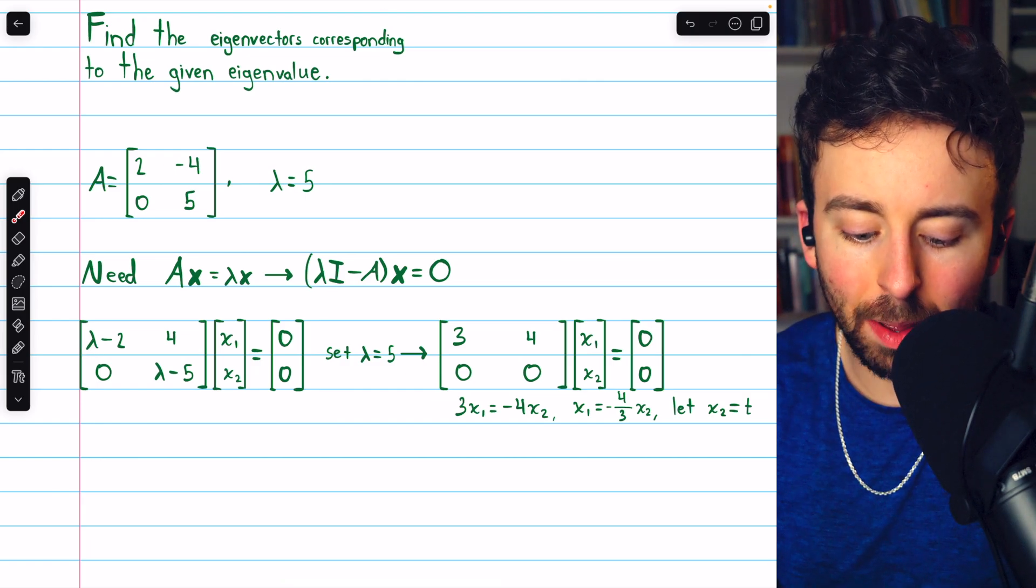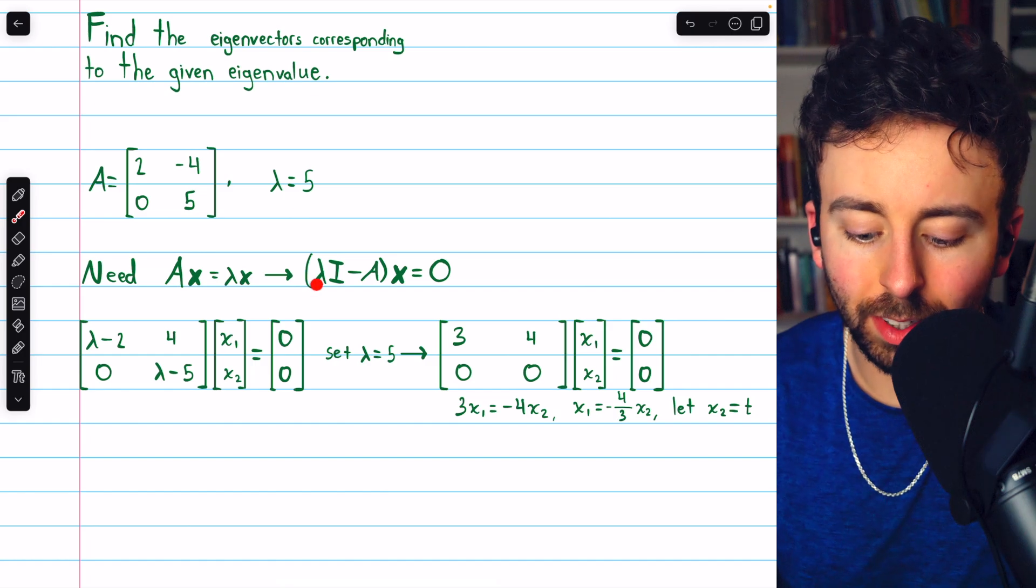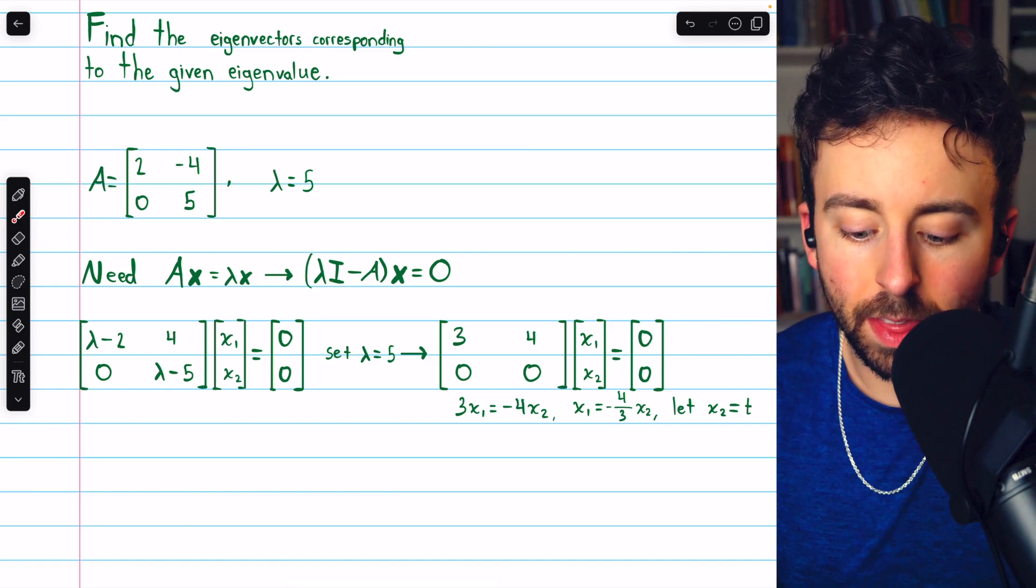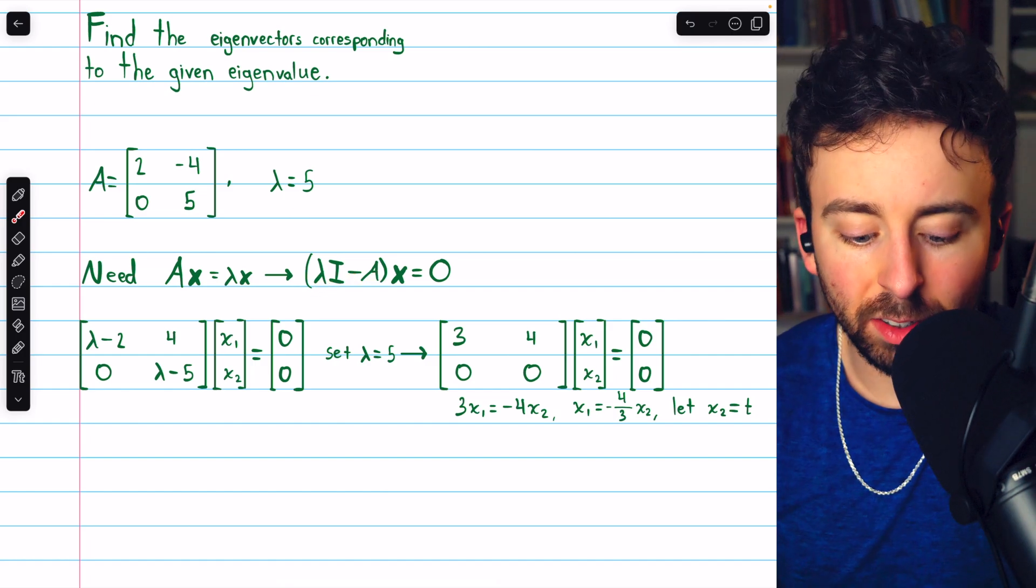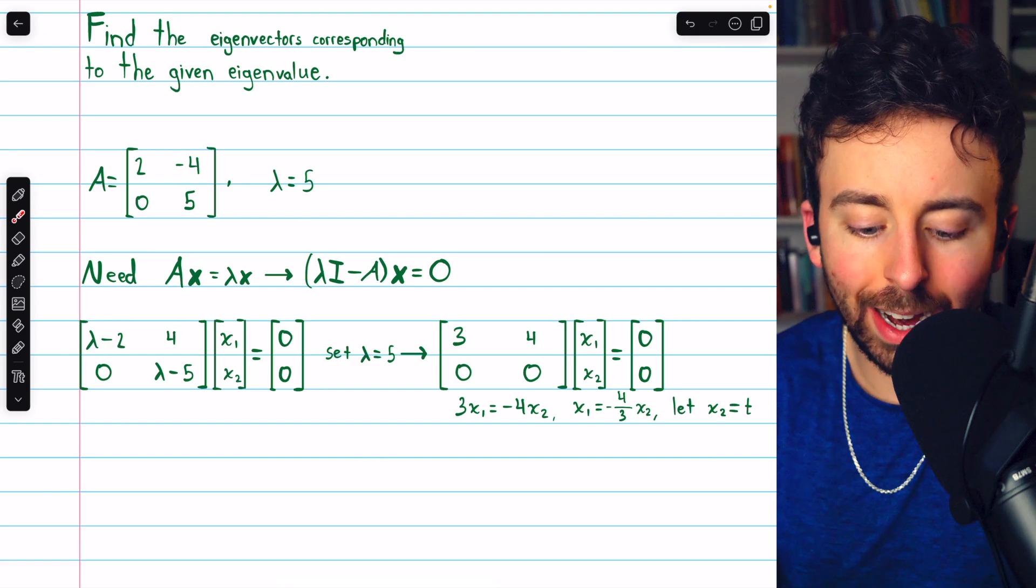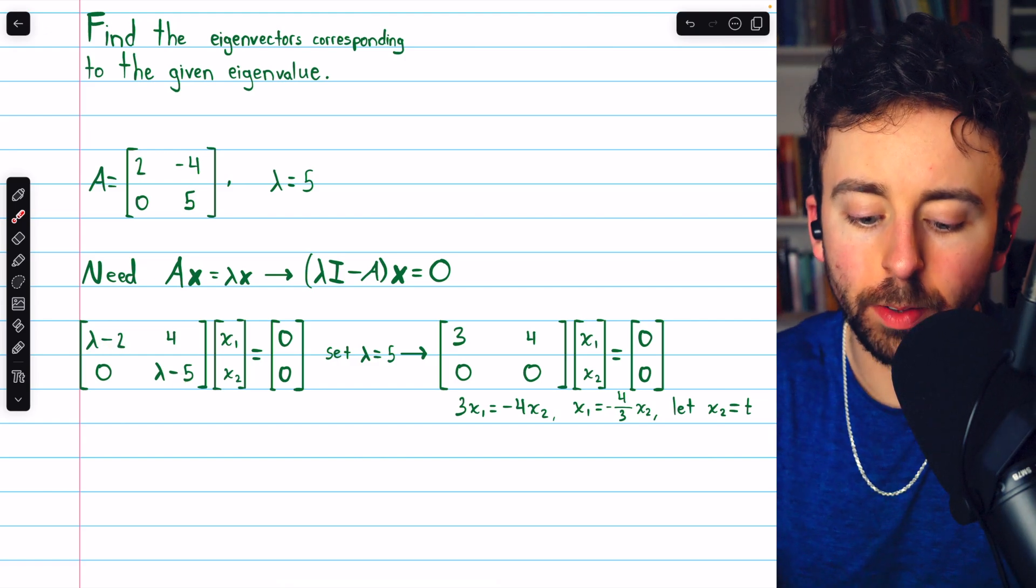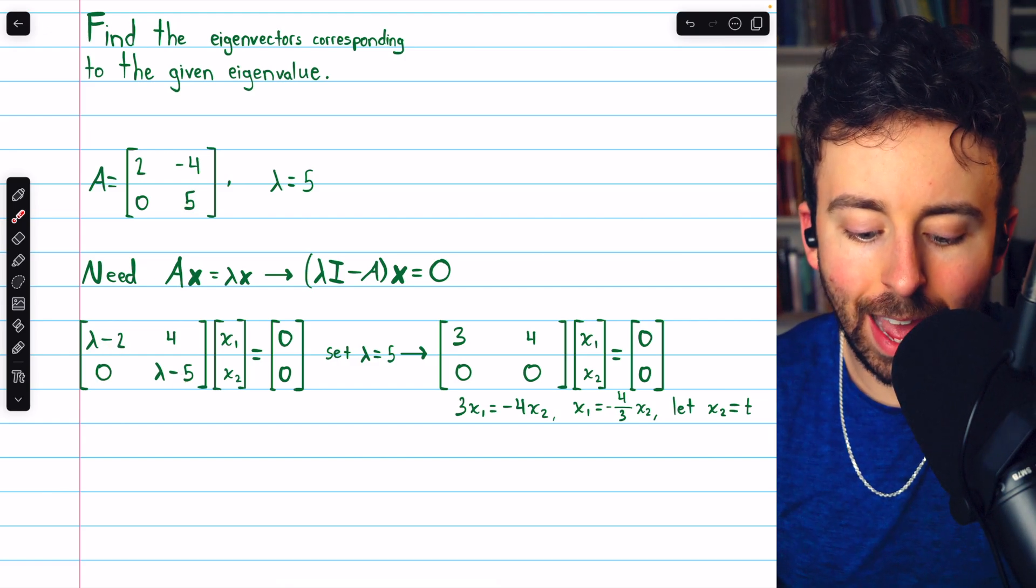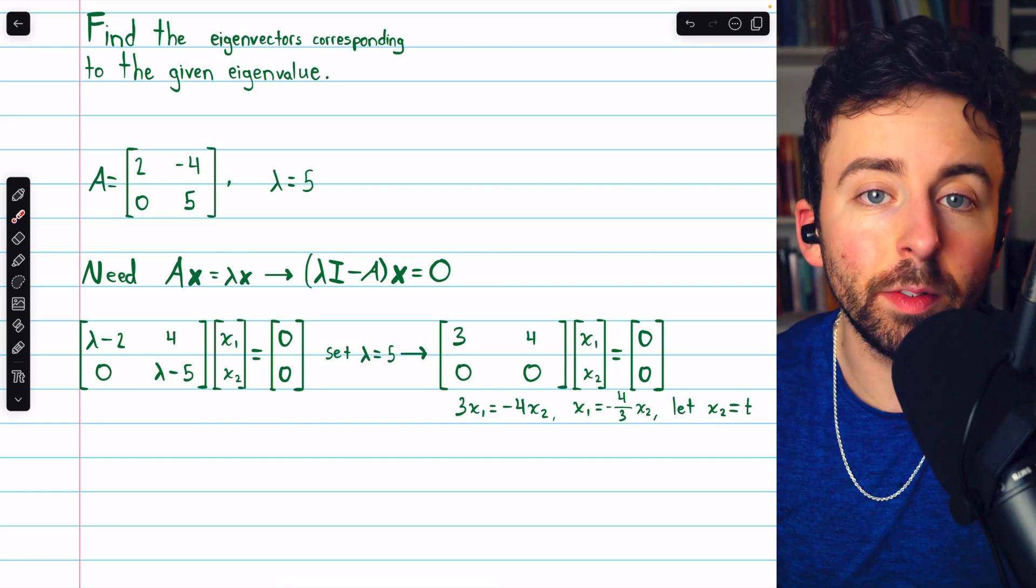Well, it's going to have lambdas on the main diagonal because lambda times the identity. And then we're going to subtract A. So on the diagonal, we'll be subtracting the entry of A. And off the diagonal, we'll just have the negative entries of A.